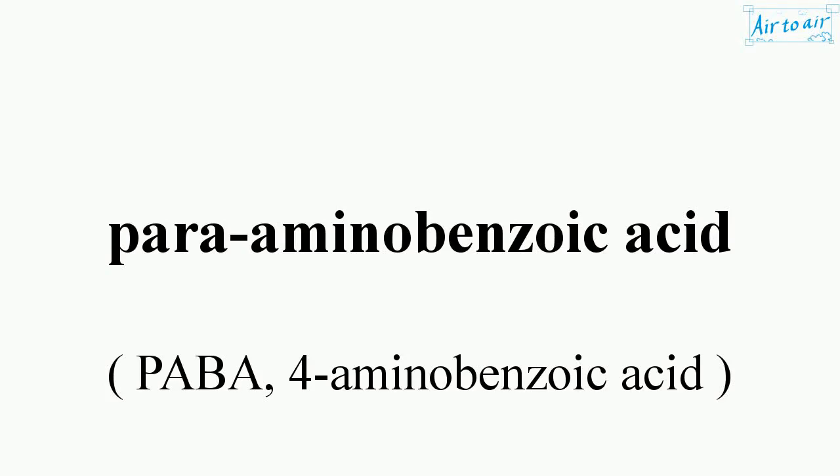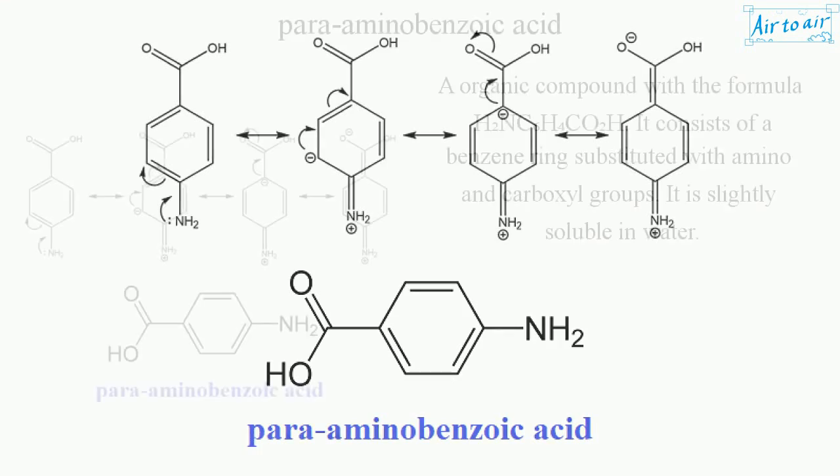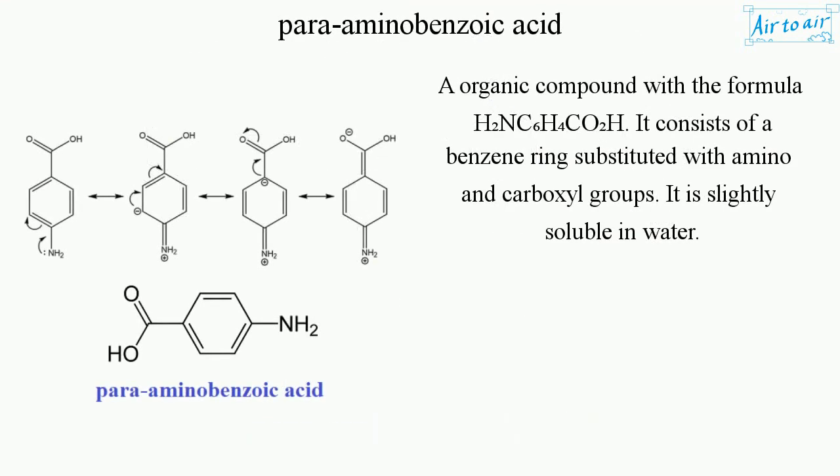Para-amino-benzoic acid is an organic compound with the formula HN-CH-CoH. It consists of a benzene ring substituted with amino and carboxyl groups. It is slightly soluble in water.